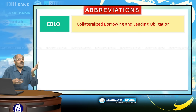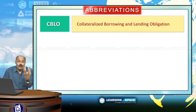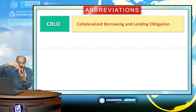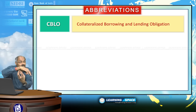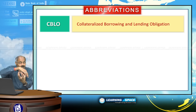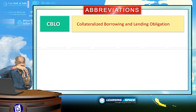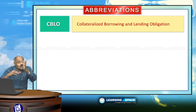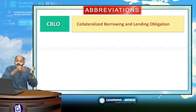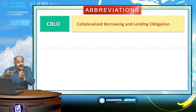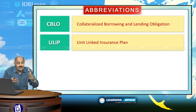CBLO is Collateralized Borrowing and Lending Obligation. The organization that borrows has to pay back in time, and as security, government securities — like treasury bills or dated government securities — are used as collateral. When one financial institution is borrowing from another, this collateralized borrowing and lending obligation is a money market instrument, and the collateral security is a treasury bill or dated government security.